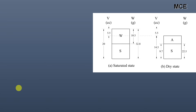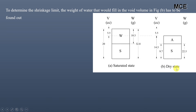Now let's find the same values using the phase diagram of the soil. The phase diagram shows the saturated state and the dry state. Left-hand side values are volumes in cubic centimeters and right-hand side values are weights in grams. To find the shrinkage limit, we need to find the weight of water that would fill the void volume in figure B.